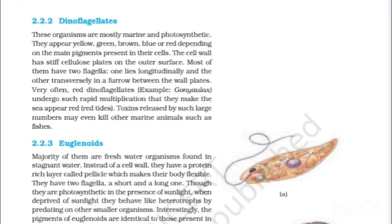2.2.2 Dinoflagellates. These organisms are mostly marine and photosynthetic. They appear yellow, green, brown, blue or red depending on the main pigments present in their cells. The cell wall has stiff cellulose plates on the outer surface. Most of them have two flagella — one lies longitudinally and the other transversely in a furrow between the wall plates. Very often, red dinoflagellates — e.g., Gonyaulax — undergo such rapid multiplication that they make the sea appear red, causing red tides. Toxins released by such large numbers may even kill other marine organisms such as fishes.